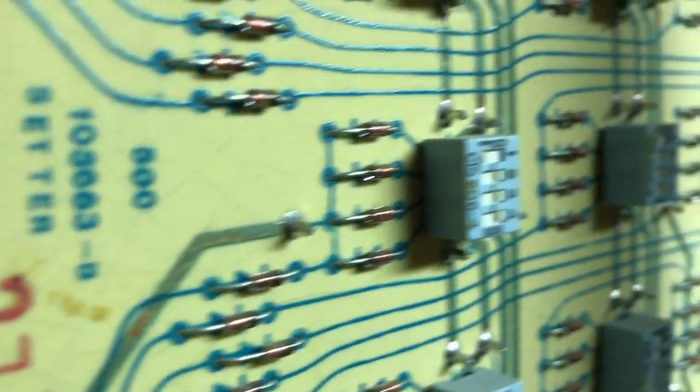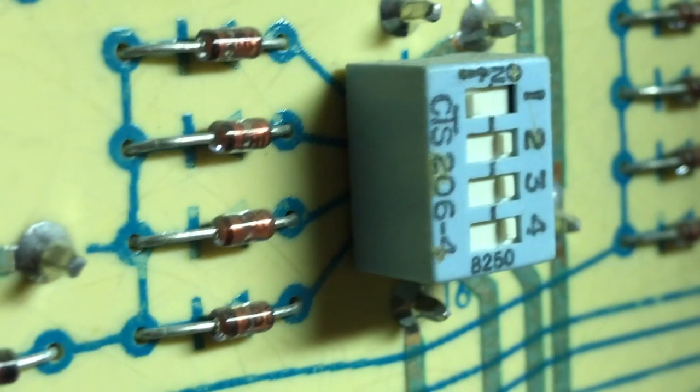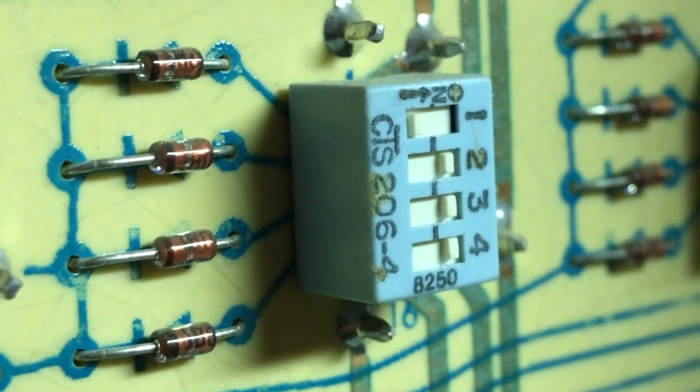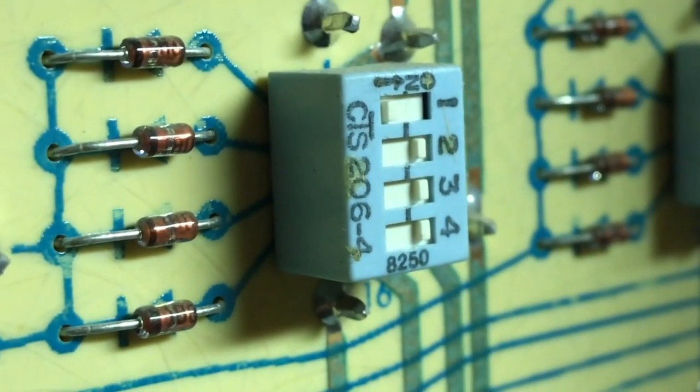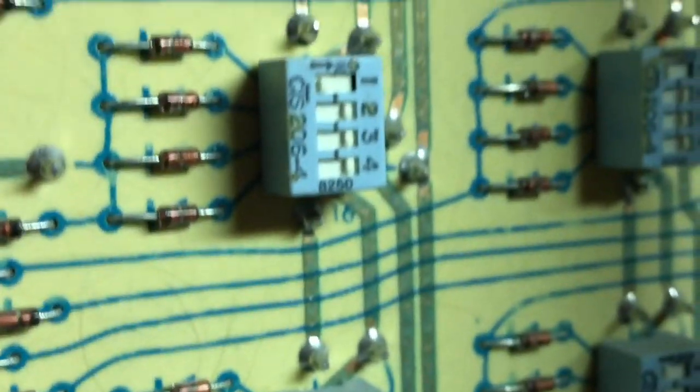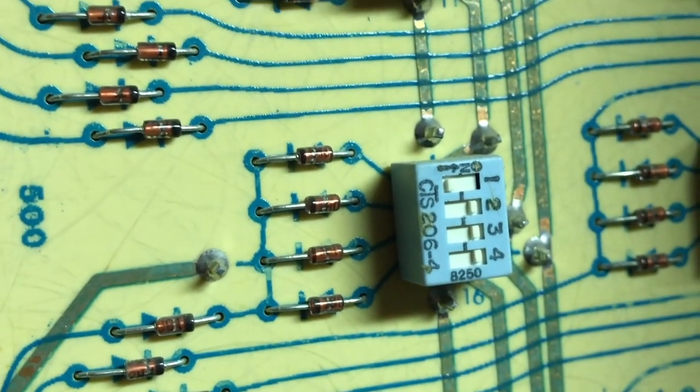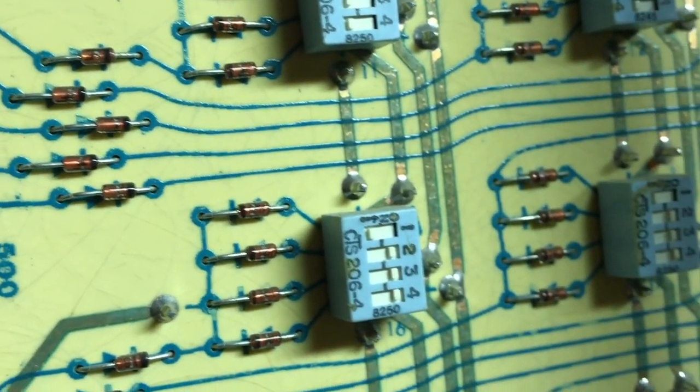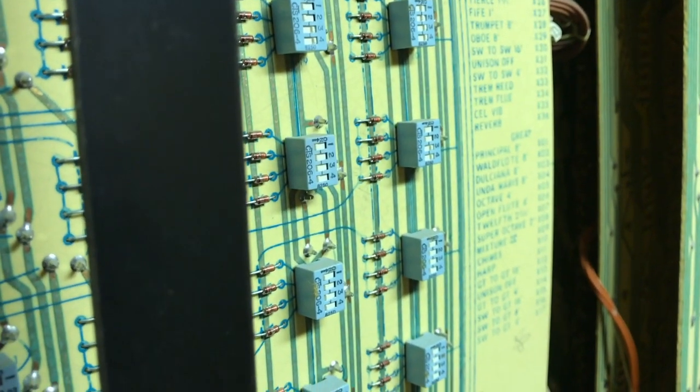And you see right here, I'm going to use this one as an example. You'll see numbers 1, 2, 3, 4, these are the numbers of the pistons. So for this particular stop, which is number 16, which looking at our reference chart over there is the swell to great 8 foot coupler,